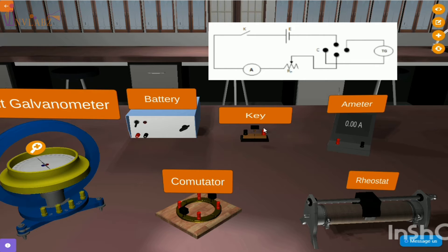For this experiment, we need a battery, tangent galvanometer apparatus, ammeter, key, commutator, and rheostat.